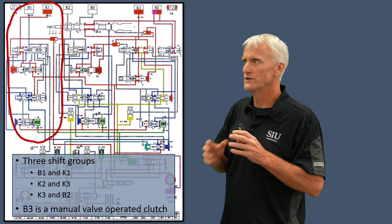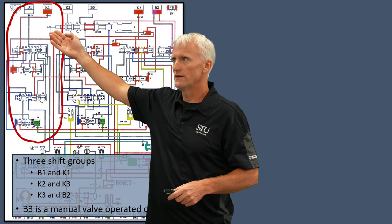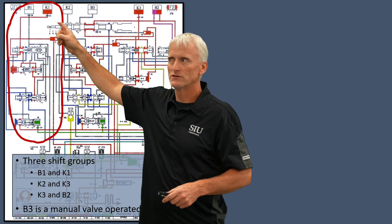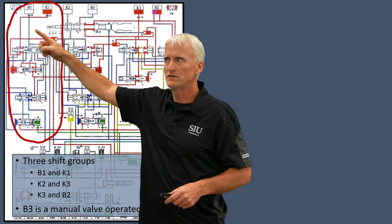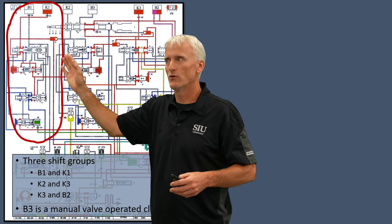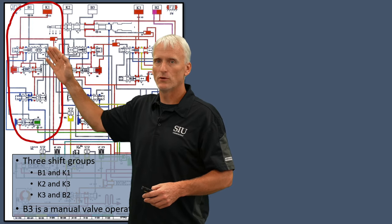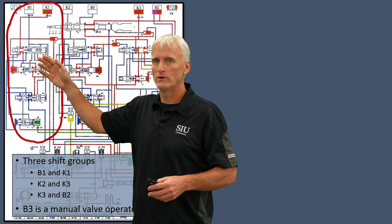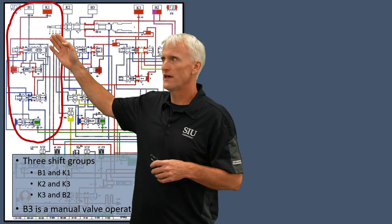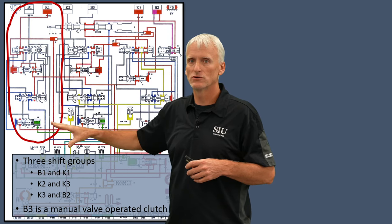The reason why there are two clutches in each group — for example the B1 and K1 — is because these valves are responsible not only for applying the K1 and releasing the B1, but also for applying the B1 and releasing the K1. They're always working back and forth. Right now the K1 is applied and the B1 is off, but when we do a downshift from second to first, the K1 clutch is going to release and the B1 clutch is going to turn on — and these valves control that.